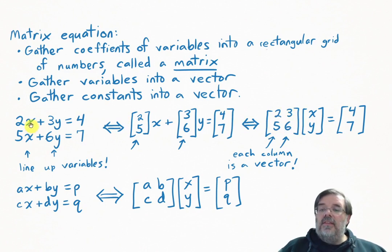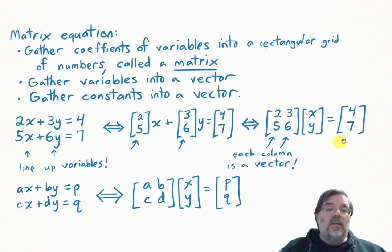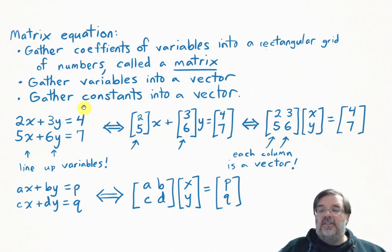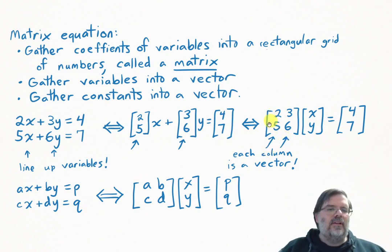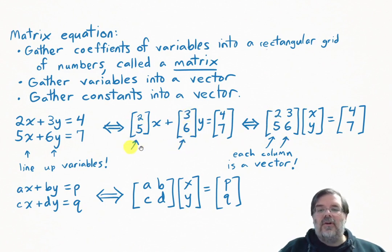The matrix contains coefficients 2, 3, 5, 6. The variables x and y go into a vector, and the constants 4 and 7 go into another vector. This is the matrix equation which represents this system of equations. It's going to be important to go back and forth between a system of equations, a vector equation, and a matrix equation. If you look at each column of this matrix, each column is one of the vectors of coefficients of the variables — so they're all related.